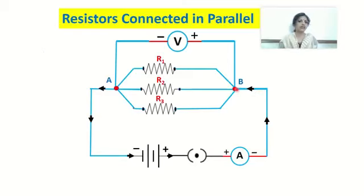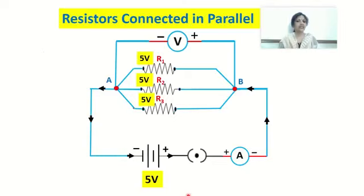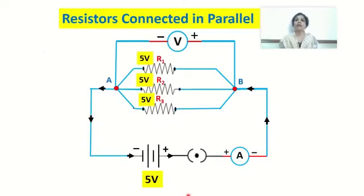If the potential difference across the battery is 5 volts, you will observe that the potential difference across every resistor is also 5 volts, because the voltmeter is connected across the combination and the battery is also connected across the combination. The important point to learn is that when resistors are connected in parallel, the potential drop across every resistor is constant.